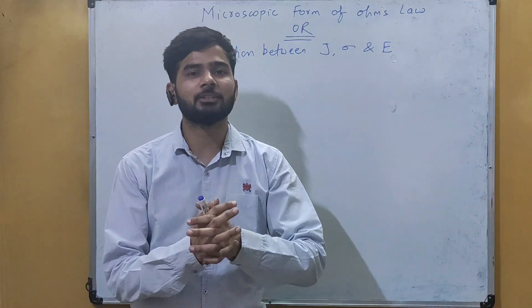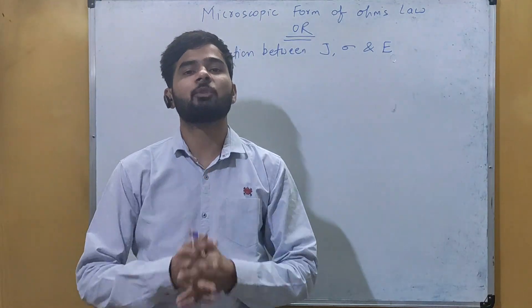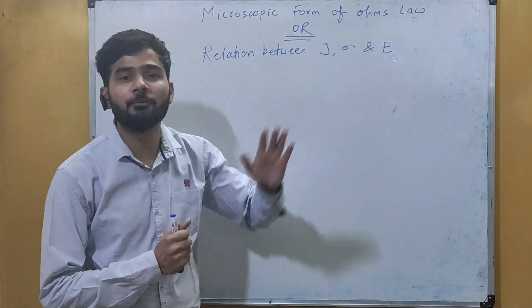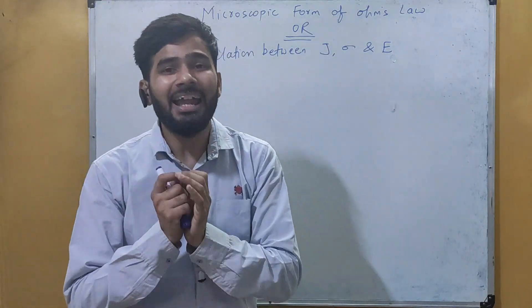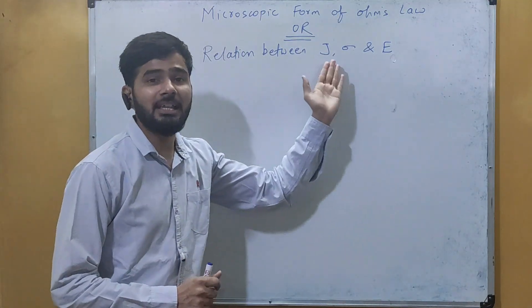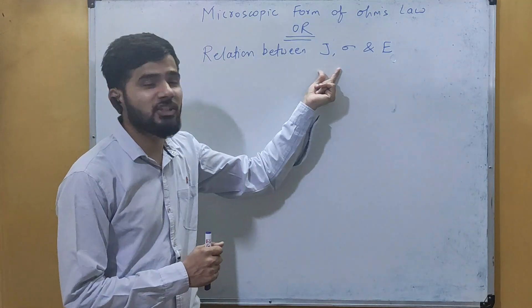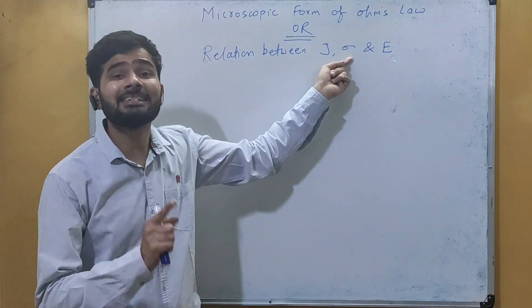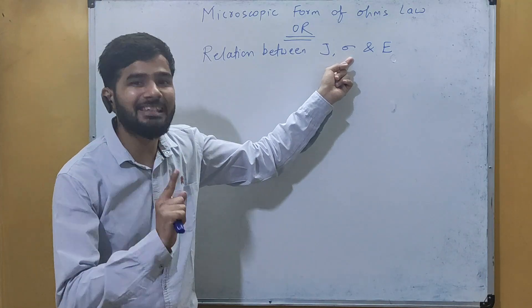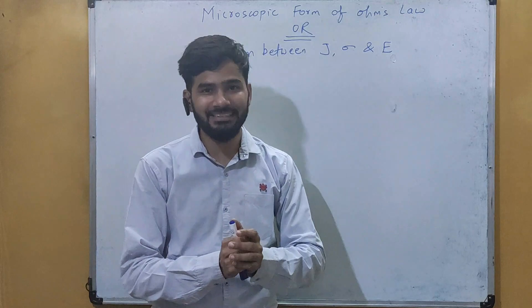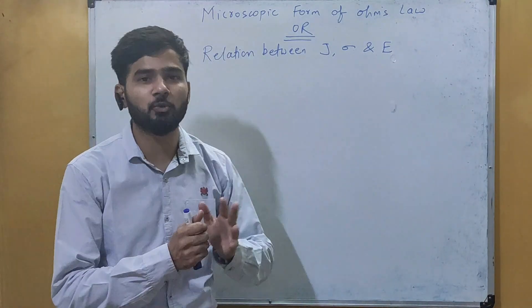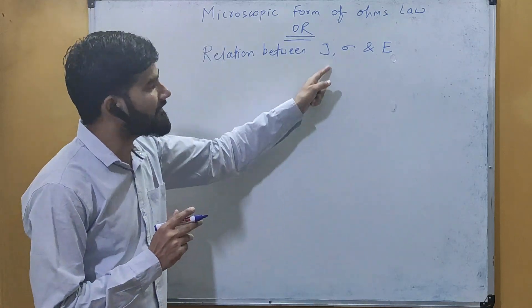Hello students, welcome back to my lectures of Class 12 Physics. We're studying Chapter: Current Electricity, and our new topic is the microscopic form of Ohm's law. This microscopic form is also called the relation between j, sigma, and E — where j is current density, sigma is electrical conductivity, and E is the electric field intensity.